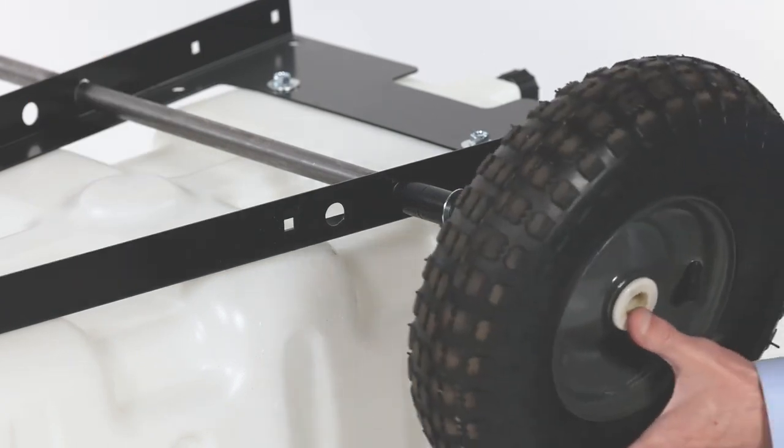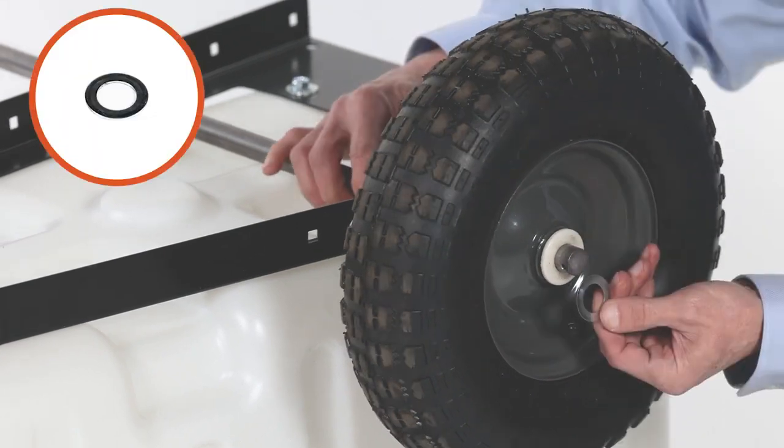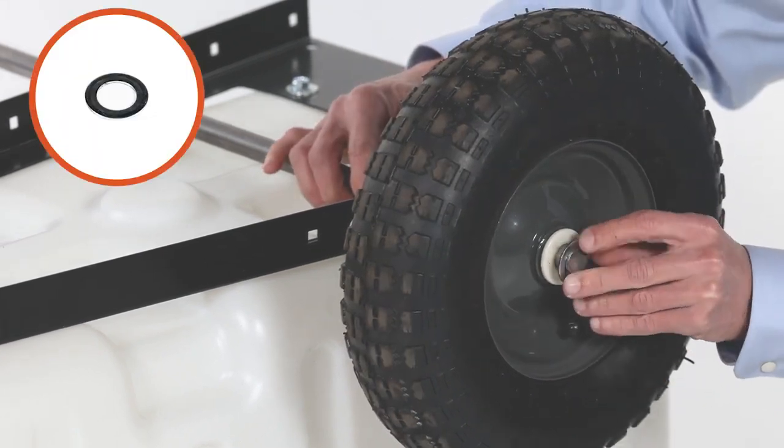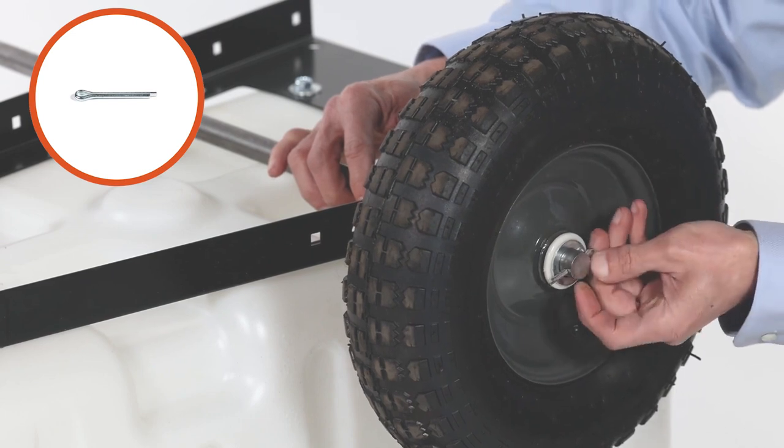Then slide on a wheel, Part 5, with the valve stem facing out. Next, slide on a washer, Part E, and secure it with a 1 1/4-inch cotter pin, Part M.